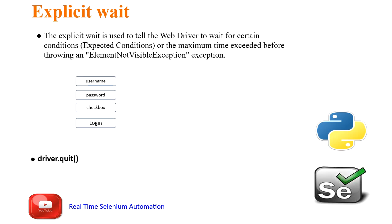Hi guys, welcome to Real Time Automation. In this video we will see about explicit wait. Explicit wait is used to tell a web driver to wait for a certain condition or the maximum time exceeded before throwing an element not visible exception.